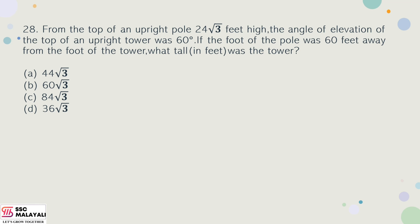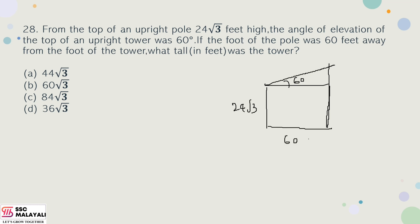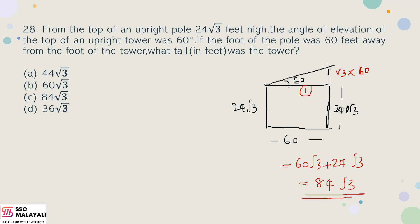Question 28: From the top of an upright pole 24√3 feet high, the angle of elevation of an upright tower is 60°. The height difference is given and using tan 60° = √3, the calculation gives 64√3. Option A is the correct answer.